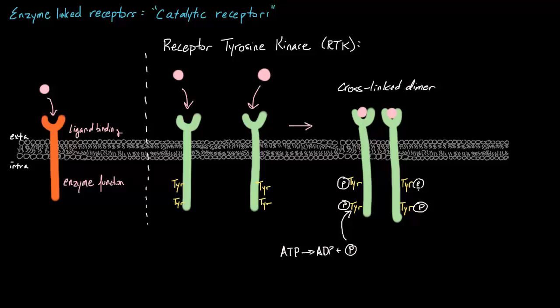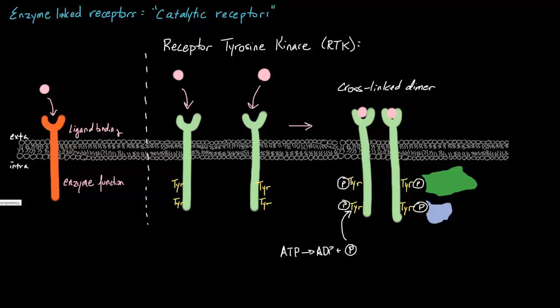Once cross-phosphorylated, the intracellular cytoplasmic section — the enzymatic section of these RTKs — serves as docking platforms for different intracellular proteins involved in signal transduction. Once we have these phosphates on the tyrosines, different proteins can come and attach themselves to them. The only thing these proteins need to dock with the phosphorus is a special domain called SH2, which can bind to these phosphorylated tyrosines. Multiple different SH2-containing proteins can bind at the same time to any of these phosphates, allowing activation of multiple different intracellular signaling pathways simultaneously.